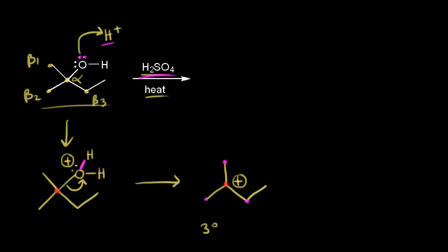Next, let's think about the next step of an E1 mechanism. A base is going to come along and take a proton from one of the beta carbons. Let's start with beta two — let's think about a proton on that carbon. Our weak base comes along and takes this proton, which would leave these electrons to move in to form a double bond. So we would have our double bond forming right here. The electrons in light blue are going to move in to form our double bond, and we get this alkene. So that's beta two.